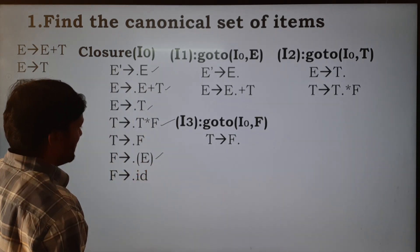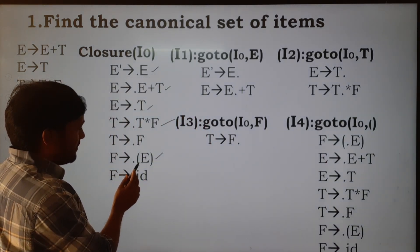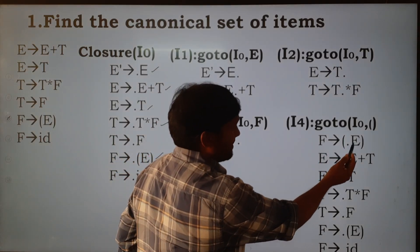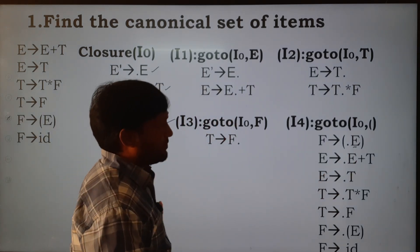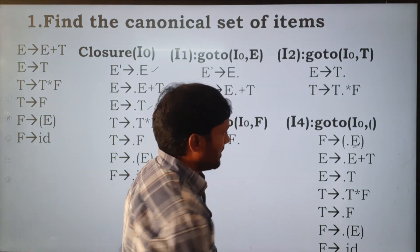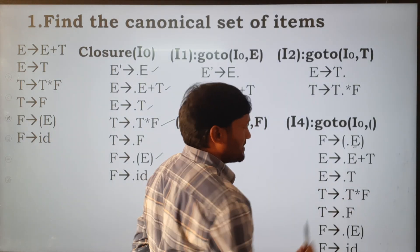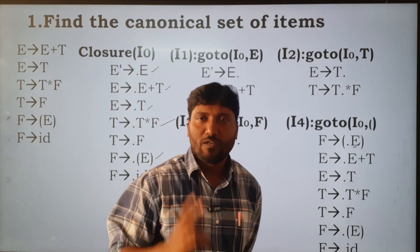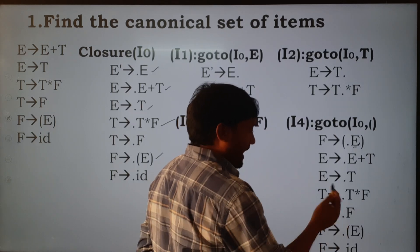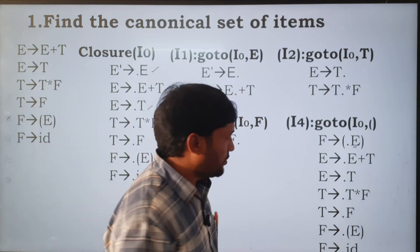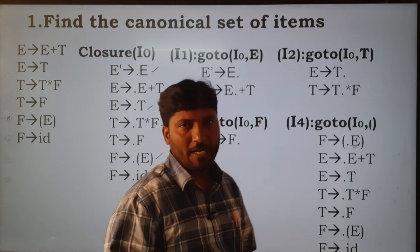Next we apply the goto function for open bracket — goto(I0, open bracket). The dot symbol is moved one position to the right: F → (.E). There is a non-terminal symbol E after the dot, so we add its two productions: E → .E+T and E → .T. After that there is T, which has two productions: T → .T*F and T → .F. Again there is capital F with two productions: F → .(E) and F → .id.